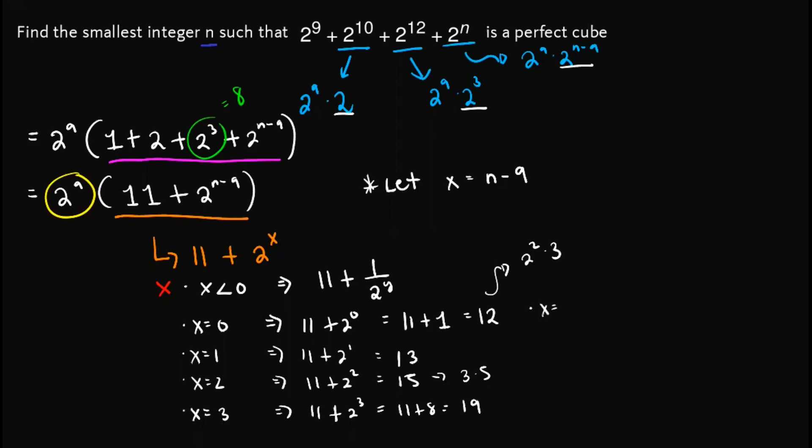For x equals 4, we have 11 + 2^4. This one is equal to 11 + 16, which is equal to 27. And note that we can actually write 27 as 3^3. So we have already found a value of x that would make this expression out here a perfect cube. And that is x equals 4.